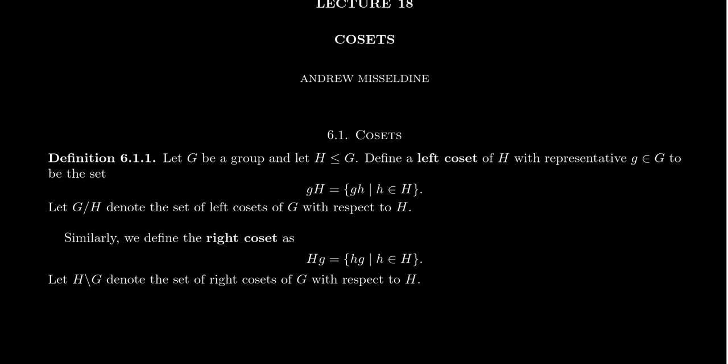If you are using LaTeX and want to type the right coset notation with a backslash, you have to be cautious because the normal backslash is a protected character used to start commands. So if you actually want to write the backslash symbol, you use the command backslash-backslash. That's how you get the backslash symbol when you need to talk about right cosets.